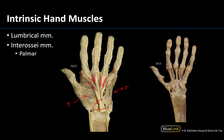You can see these worm-like muscles that are going to have their proximal attachment on the tendons of flexor digitorum profundus — unique in terms of where their proximal attachments are. You can see there are going to be four of these. These are going to be the lumbrical muscles.